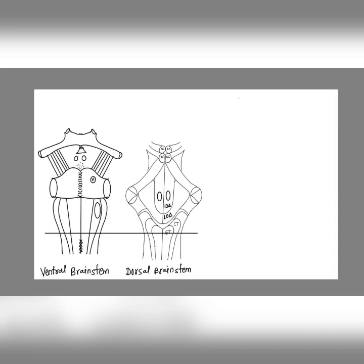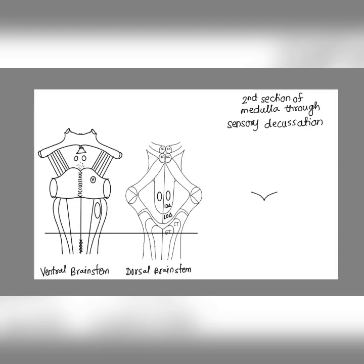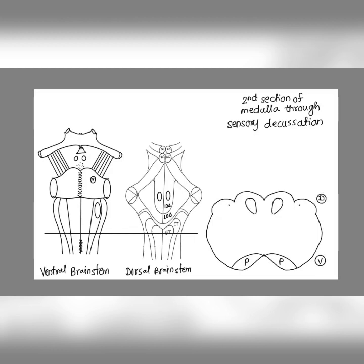The second section is at the level of sensory decussation. It is passing just above the pyramidal decussation and it will also pass through the gracile tubercle and cuneate tubercle. We can also see pyramids ventrally, and dorsally we can see gracile and cuneate tubercles. Note that the sensory decussation is not shown in this section.